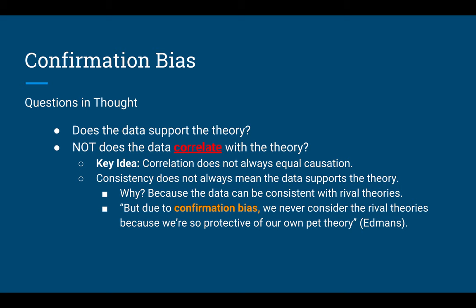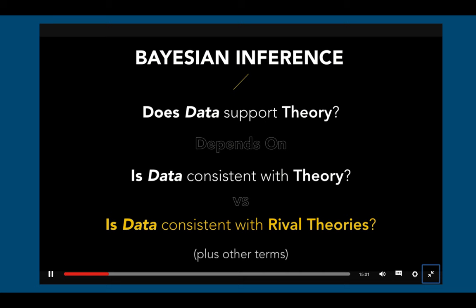He mentions Bayesian inference in his video. I won't go into too much detail because it's a complex mathematical and statistical concept. What I want you to understand is simply: does the data support the theory? Don't get hung up on whether data is consistent with the theory, because data can be consistent with rival theories. You need to look at data on all levels through all rival theories, and then determine if the data supports the theory — because if rival theories can use the exact same data, it doesn't mean you're correct.